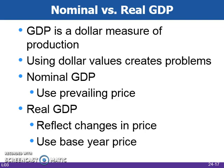GDP measures production at current dollar values, which creates problems because the value of a dollar changes over time. One hundred years ago, the purchasing power of one dollar was much different than it is today.